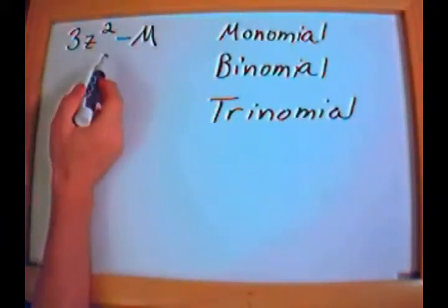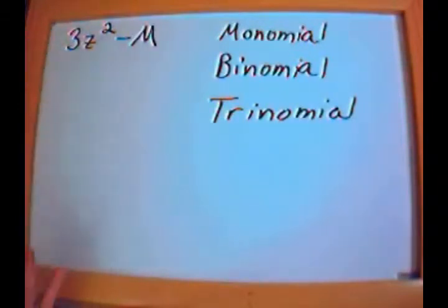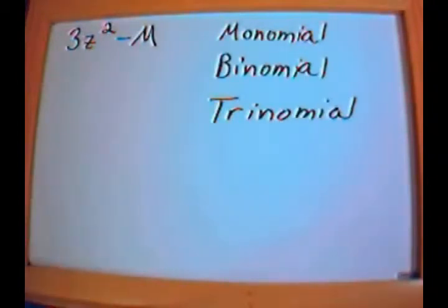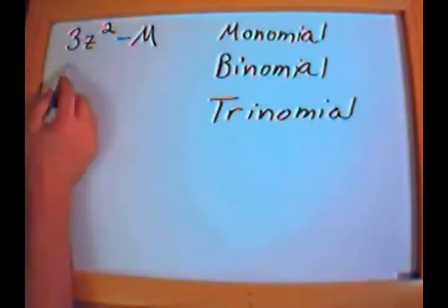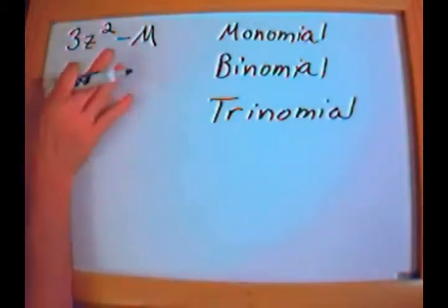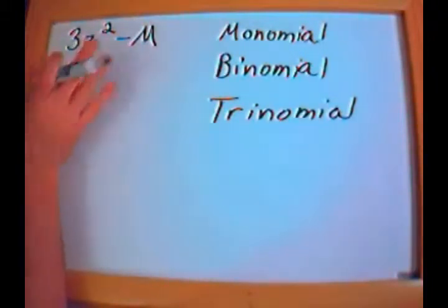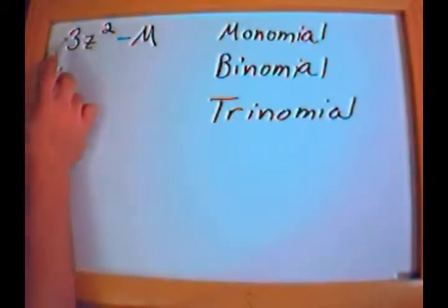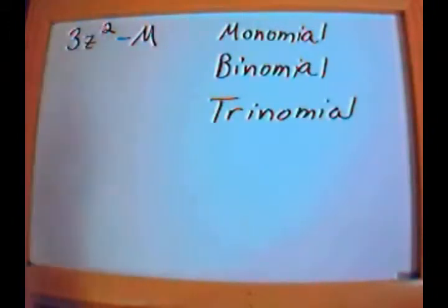The reason it's a monomial is because there's one term. Polynomial — poly means more than one, and nomial means term. Polynomial means many terms, basically — terms involving variables. These are all polynomials, but this one here is a monomial because it only contains one term: 3z to the second power.